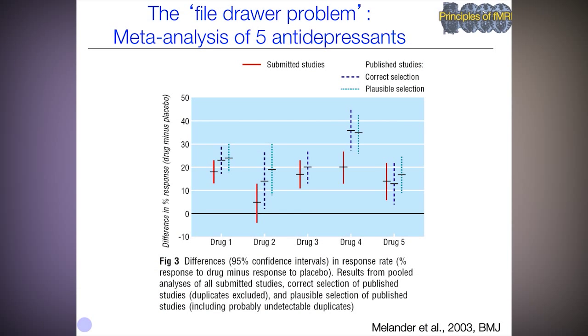Here's an illustration of the file drawer problem using studies of antidepressants submitted to the British Medical Council. Across five drugs, the published studies (blue lines) show high effect sizes on the y-axis. But since there's a national registry where all data must be submitted, we can also look at unpublished studies (shown in red). Across the drugs, effect sizes from all studies are substantially lower than in published studies alone — a clear example of the file drawer problem in action.